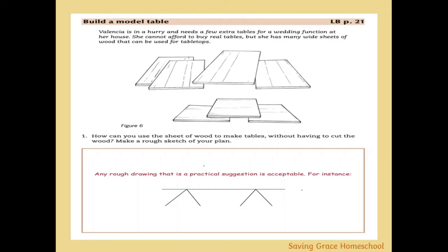This is open-ended — any more-or-less practical design is acceptable. One design that works without any fasteners is a flat piece of wood on top forming the table surface, with two smaller sections forming triangle-like feet that support it. Different solutions that still work are also acceptable.